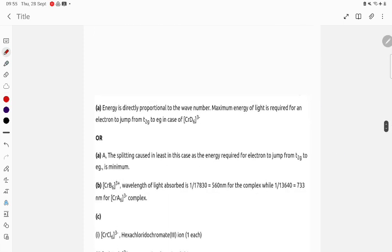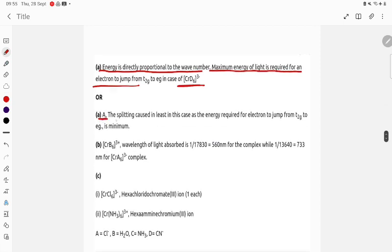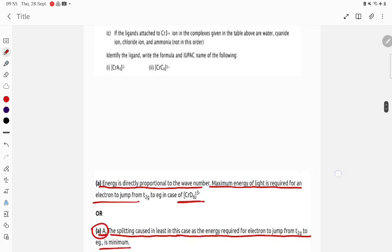If you want to see here, student, energy is directly proportional to wave number. Maximum energy is required for the electron to jump. So correct option is [CrD6]³⁻. In A, the splitting causes least. In this case, the energy required for the electron to jump t2g to eg is minimum. So correct is A is going to be weak ligand.